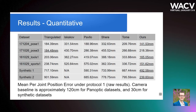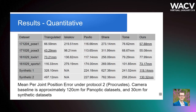Note we were unable to obtain results for Iskakov on the synthetic data due to lack of calibration information. For Protocol 2, we see much the same scenario. On the Panoptic data, our results are close to naive triangulation due to the large baseline, but as the baseline reduces, our results remain feasible while triangulation becomes inaccurate.